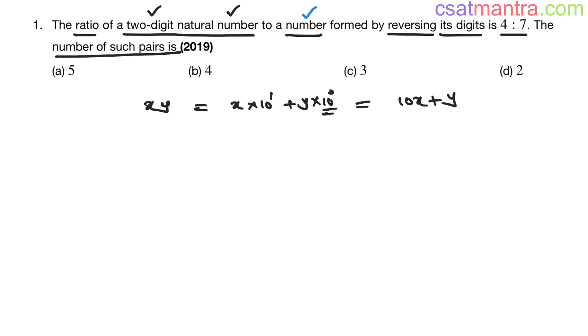Now we are forming a number by reversing its digits. yx. I have reversed the digits. Now this is y into 10 power 1, x into 10 power 0. This is 10y plus x. 10 power 1 is 10, so 10y. 10 power 0 is 1, so 1 into x is x my friends.